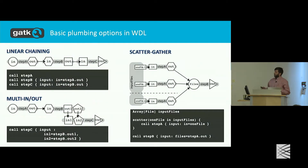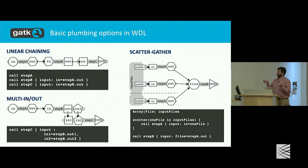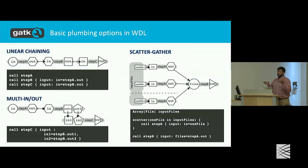There are various ways to call your tasks. Some common patterns: the most obvious is linear chaining — you call a task and tie the output of that task to another subsequent task call. Here we're calling step A, then step B with the output of A, then step C with the output of B. That's linear chaining. You can also declare multiple inputs and outputs and refer to them specifically by name — here we're referring to two outputs of step B as inputs to step C.